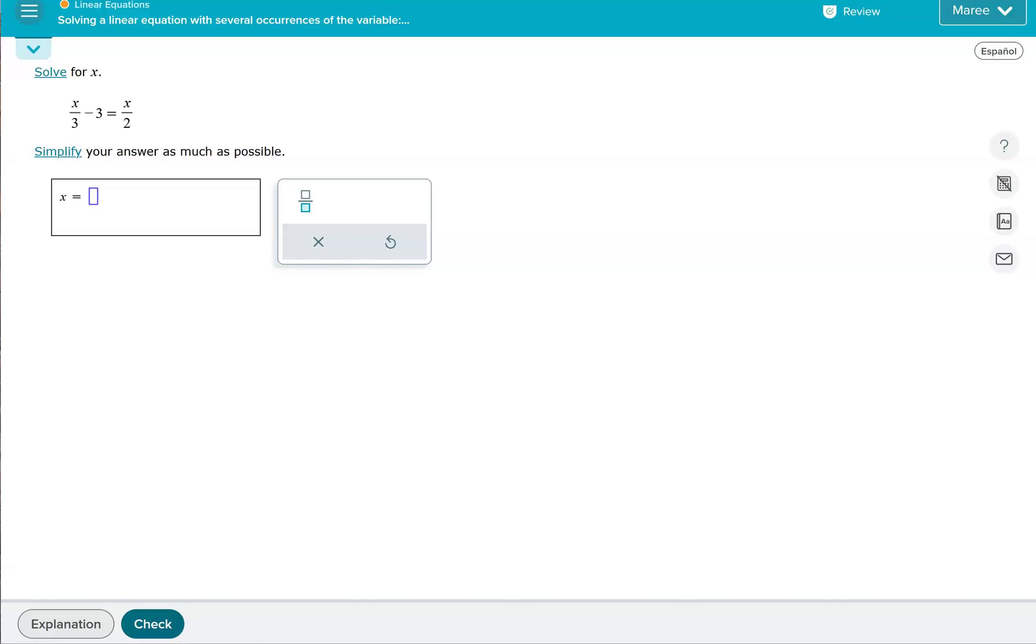In this problem here, let's rewrite it. We want to look at the denominators. We have a 3 and a 2. We want to get the least common multiple of 3 and 2, in other words the least common denominator, and that's going to be 6.